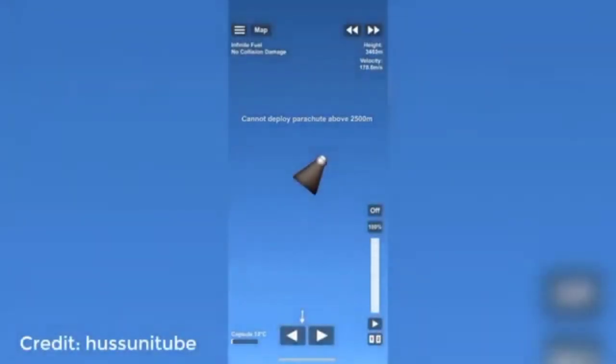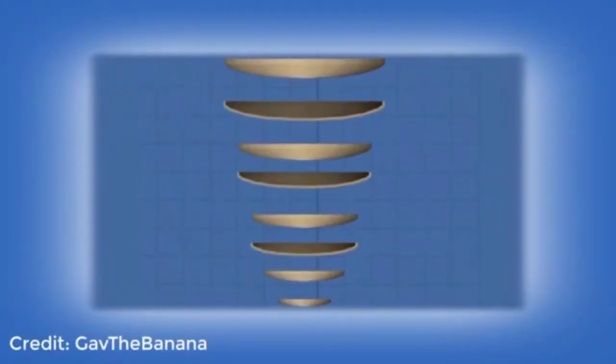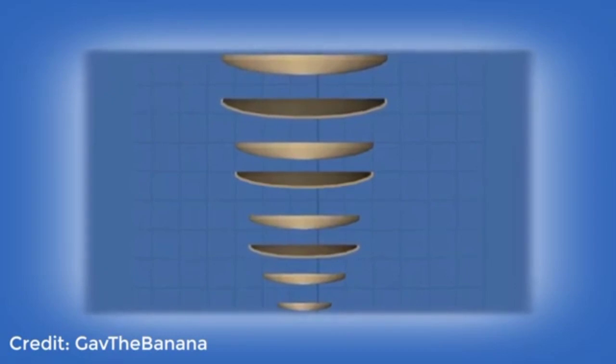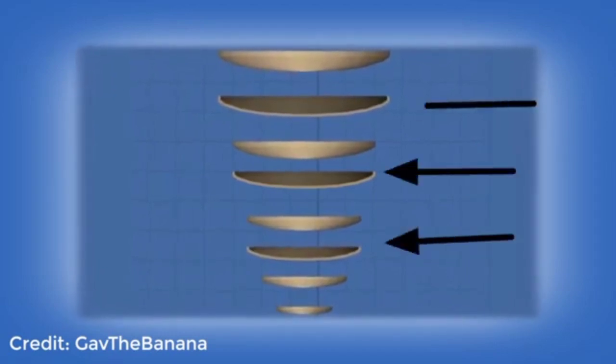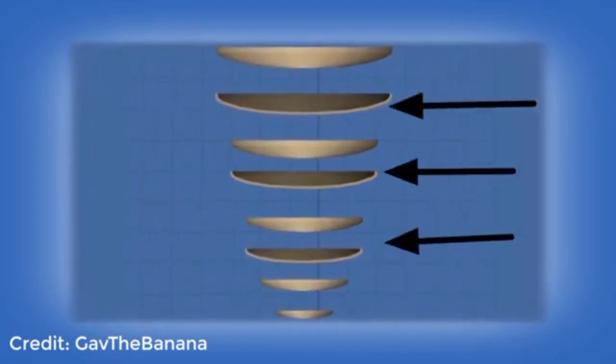So there are also an absolute ton of new parts. As we can see we have heat shields in every size, and we also have what seems to be a fairing heat shield, which I'm not sure how that will work, probably detach.